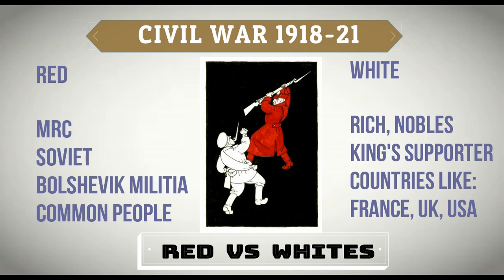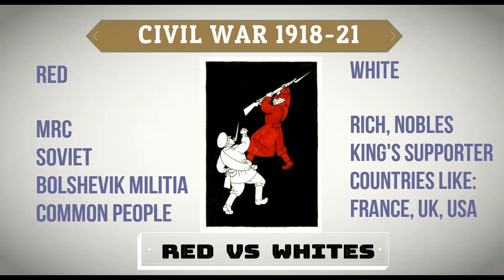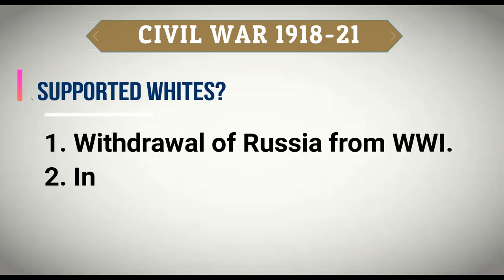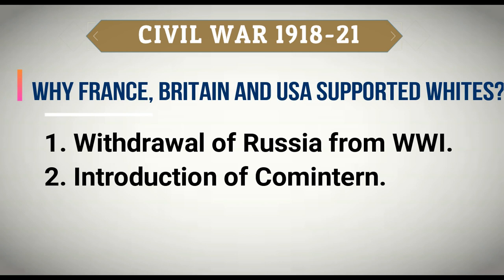The Whites were supported by the rich people, the nobles, the people who supported the king, and countries like France, Britain, and the USA. The question is: why were France, Britain, and the USA supporting the Whites? Because Russia had withdrawn from World War One and they wanted it to continue. The second reason was the concept of Comintern, which was introduced by Lenin in 1919.